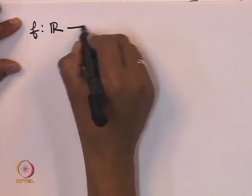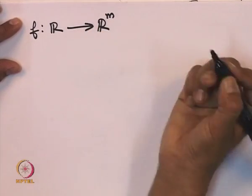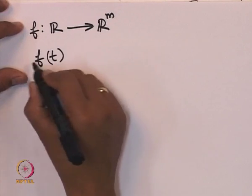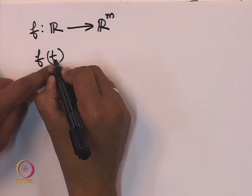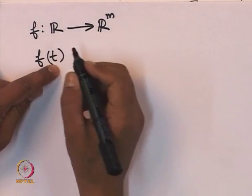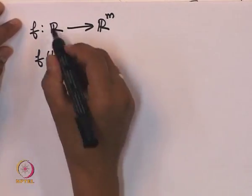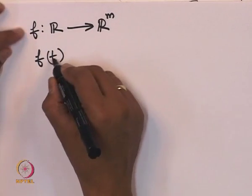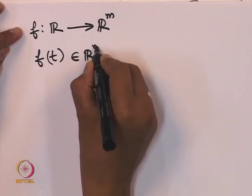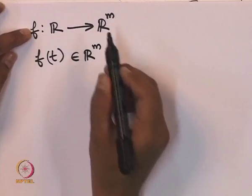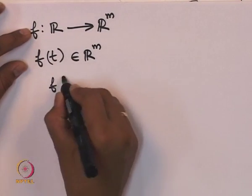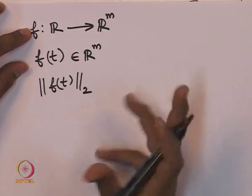These norms play a role when we are actually concerned with signals. Consider a function f from the real numbers to R^m — for any real number (time t) f gives a vector with m components. In our systems course this independent variable is time. At any time t, f is a vector in R^m, and we can speak of that vector's norm, for example its two-norm.